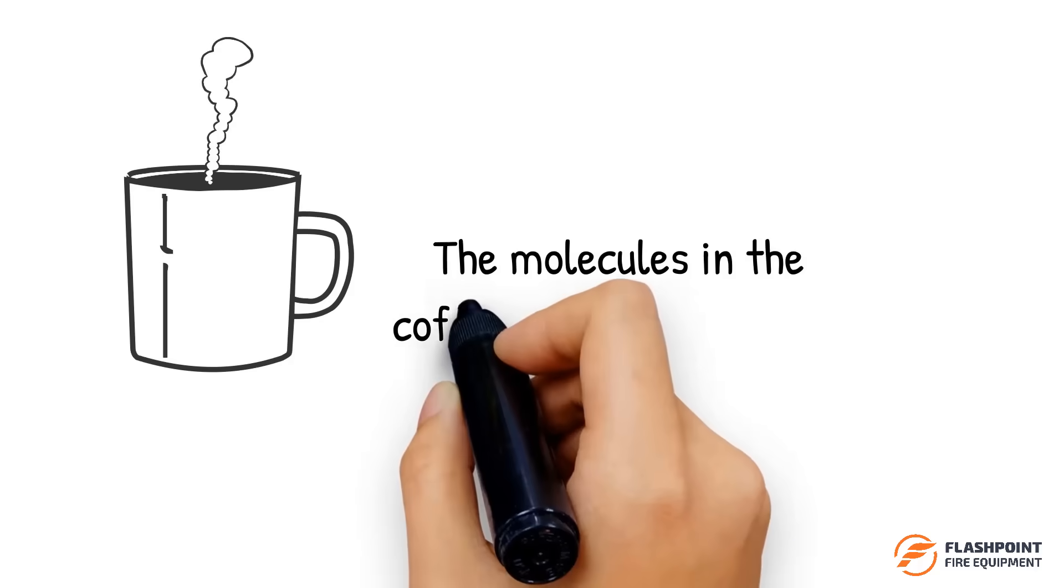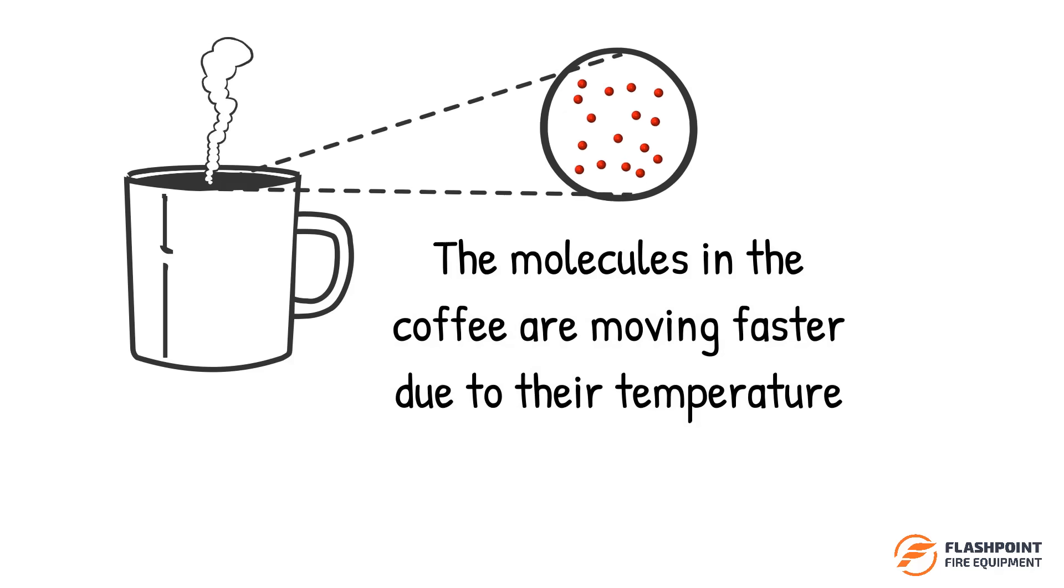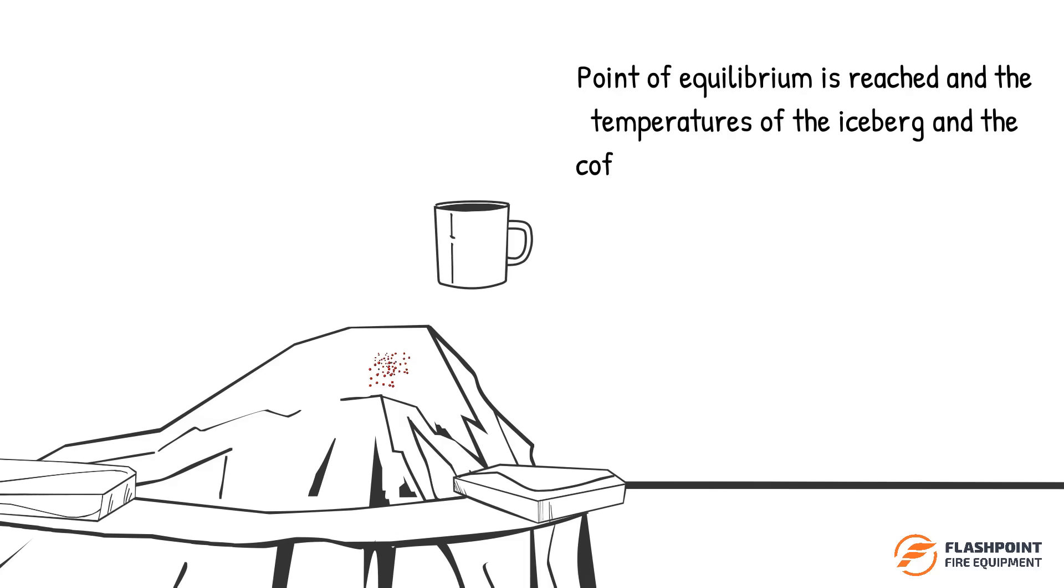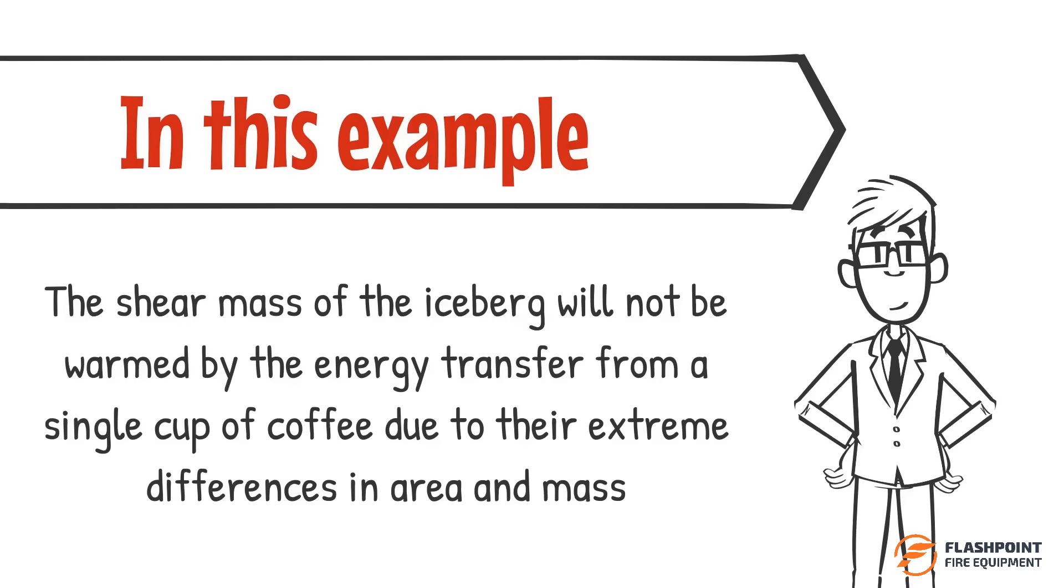Heat energy always moves from the system with the higher kinetic energy to the one with the lower kinetic energy. In the case of the coffee that is poured onto the iceberg, the molecules in the coffee are moving faster due to their temperature. As these faster molecules bombard the slower moving molecules in the iceberg, their energy will transfer until a point of equilibrium is reached and the temperatures of the iceberg and the coffee balance out at the same reading. In this example, the sheer mass of the iceberg will not be warmed by the energy transfer from a single cup of coffee due to their extreme differences in area and mass.